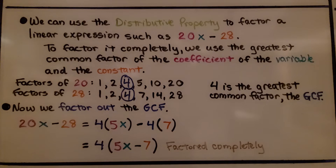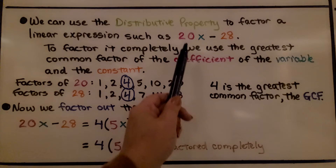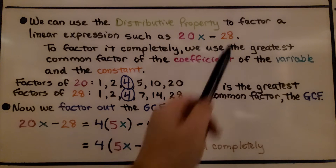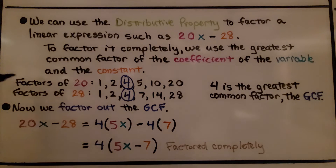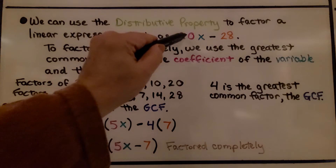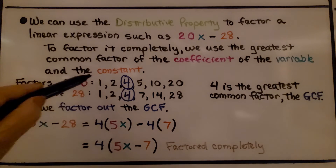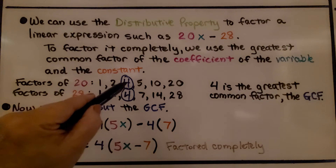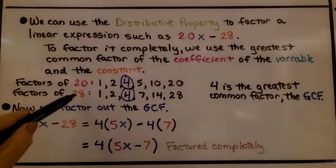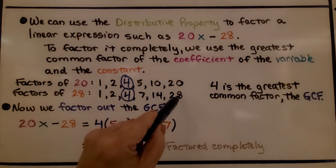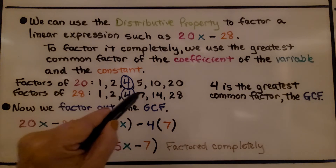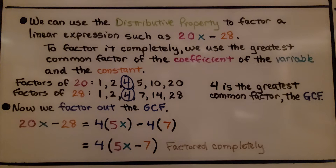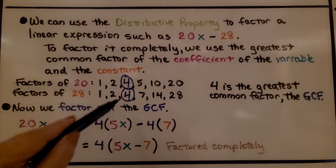We can use the distributive property to factor a linear expression such as 20x minus 28. To factor it completely, we use the greatest common factor of the coefficient of the variable and the constant. The factors of 20 are 1 times 20, 2 times 10, and 4 times 5. The factors of 28 are 1 times 28, 2 times 14, and 4 times 7. So 4 is the greatest common factor — the GCF.